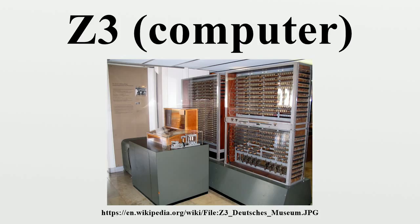Zuse was lucky. This presentation was one of the few instances where the Z2 actually worked and could convince the DVL to partly finance the next design, improving on the basic Z2 machine. He built the Z3 in 1941, which was a highly secret project of the German government.